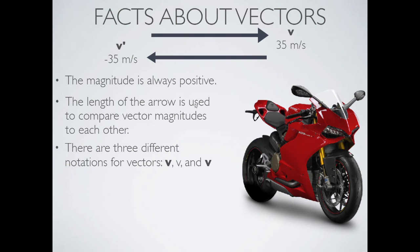And the length of the arrow, as I've said, is to compare vector magnitudes to each other, but they must be the same type of vector, the same units, to be compared this way, visually.